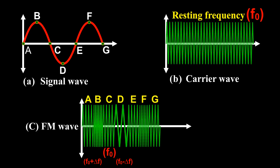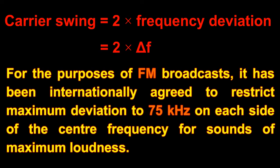The total variation in frequency from the lowest to the highest is called carrier swing, CS. Hence, carrier swing is equal to 2 times frequency deviation, or 2 × Δf.